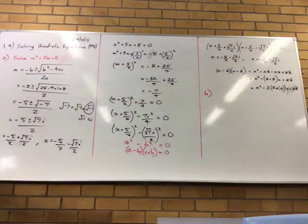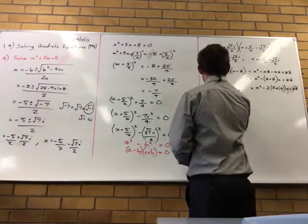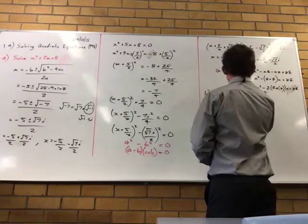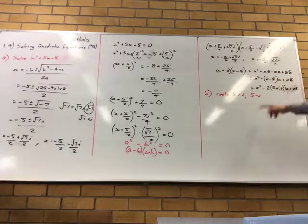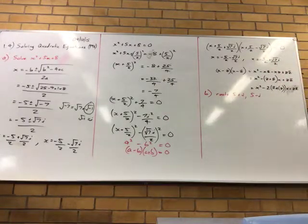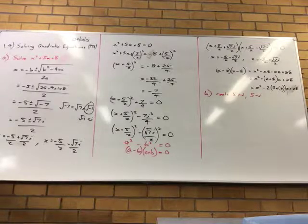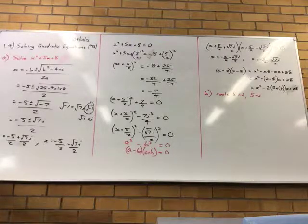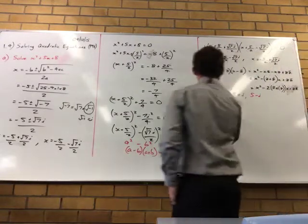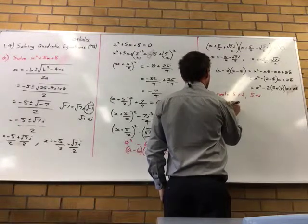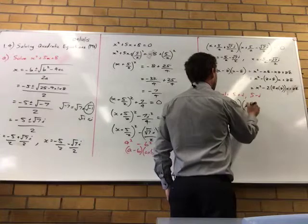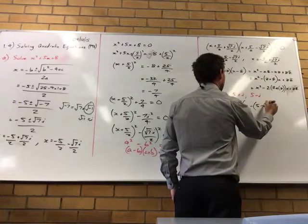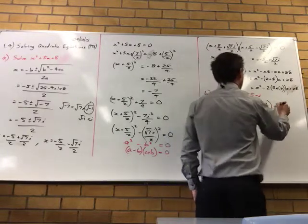So we can use those results to do the next question. So we need to find the quadratic with solution, with the root, sorry, the root 5 + i and 5 - i. So we're going backwards, so we've discovered roots from a quadratic equation using a quadratic formula and completing the square. So now we're going back and reverse. You are told the root, we need to now write down the quadratic equation.